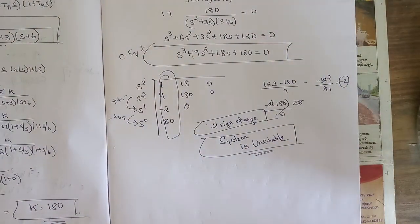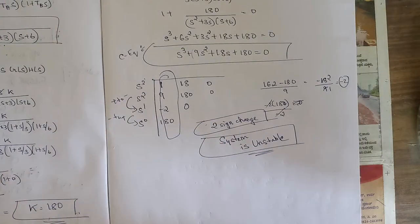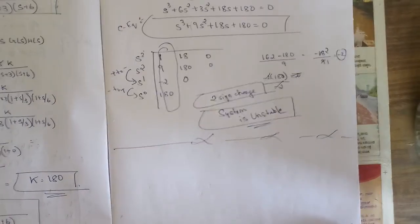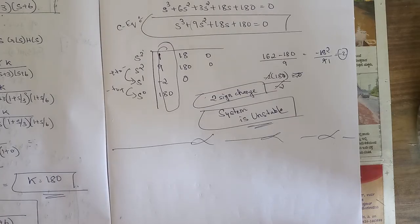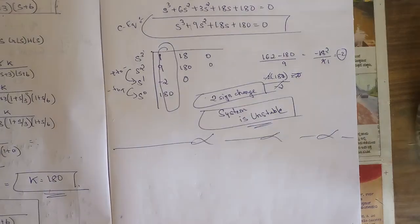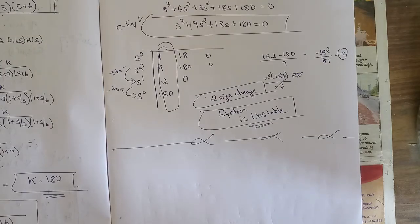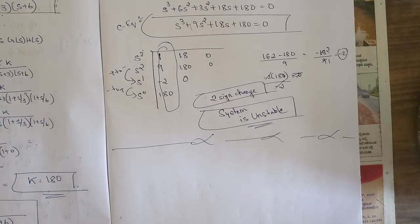This concludes the concept of Routh array and Routh stability criterion. We have solved many problems and covered all types of cases. From the next session, we start the second chapter — root locus — which is the main concept of this whole subject. The steps are complicated and will be explained in detail. Please like, share, subscribe, and check out our playlist for model paper solutions.